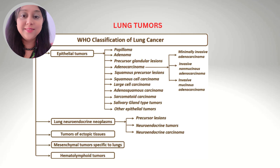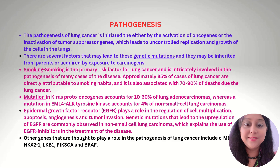The WHO has classified lung tumors as epithelial, neuroendocrine, ectopic tissue, mesenchymal, and hematolymphoid tumors. Regarding the pathogenesis of lung cancer, it is initiated either by the activation of oncogenes or the inactivation of tumor suppressor genes, which leads to uncontrolled replication and growth.